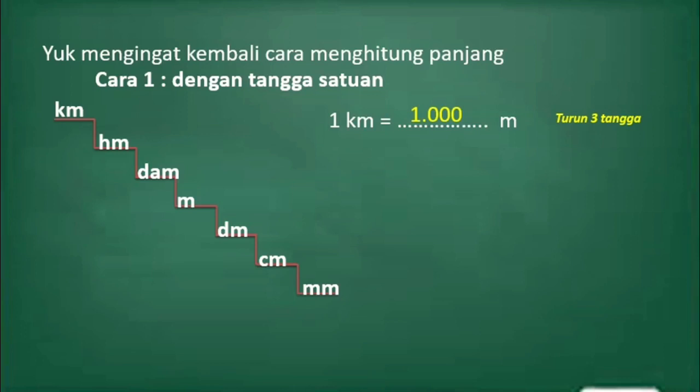Betul. Yang kedua: ada dua hektometer, nilainya berapa meter? Dari hektometer ke meter turun sebanyak dua tangga. Berarti dua dikalikan dengan seratus. Hasilnya adalah dua ratus.